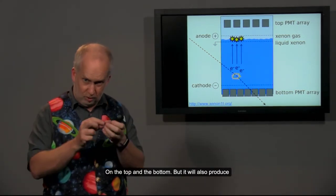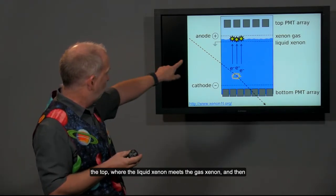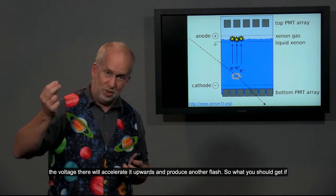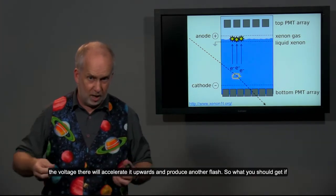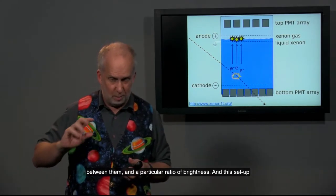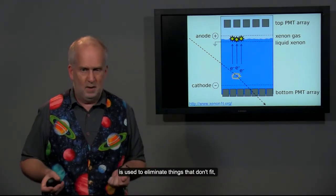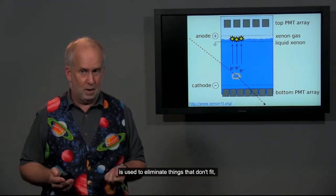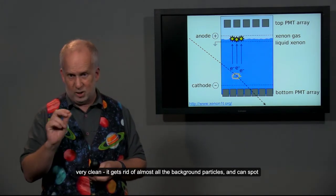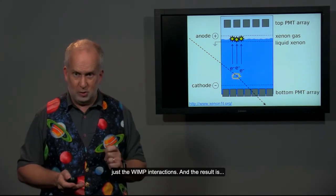But it will also produce a free electron. And this electron will be accelerated up until it reaches the top where the liquid xenon meets gas xenon. And then the voltage there will accelerate it upwards and produce another flash. So what you should get is if a dark matter particle comes through, it's two flashes with a very particular time between them and a very particular ratio of brightness. And this setup is used to eliminate things that don't fit any of the huge number of background particles that are in there. It's actually very clear. It gets rid of almost all the background particles and can spot just the WIMP interactions.